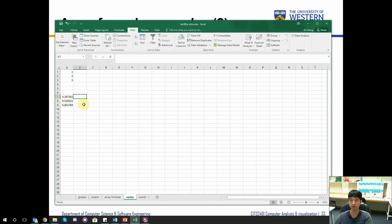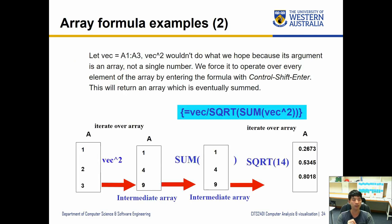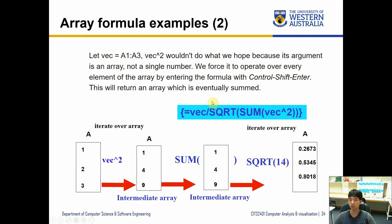Let's look at the process. With vec being A1 to A3, the innermost brackets get calculated first: vec squared turns 1, 2, 3 into 1, 4, 9. Then you get the sum — which is 14. Then the square root of 14 is used as the denominator. Since vec contains three values (1, 2, and 3), each individually gets divided by the square root of 14, giving the normalized results.